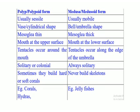Differences between polyps and medusa shown in this table: polyps are usually sessile — not able to move — while medusa are mostly motile. Polyps are vase-shaped or cylindrical; medusa are bell-shaped or umbrella-shaped. In polyps, mesoglea is very thin, but in medusa, mesoglea is very thick. In polyps, the mouth is at the upper surface, but in medusa, the mouth is at the lower surface. In polyps, tentacles occur around the mouth; in medusa, tentacles occur along the edges of the umbrella-shaped body.